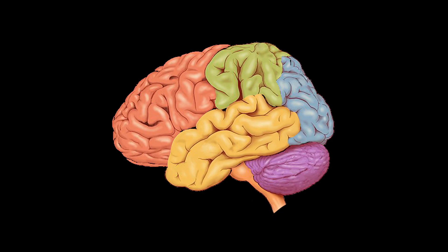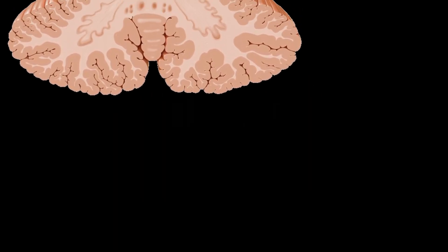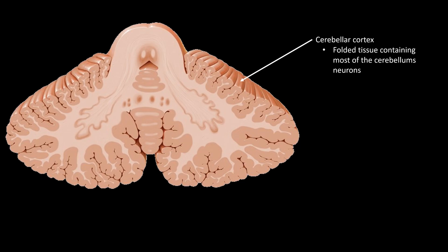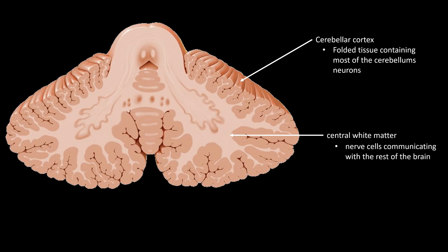It consists of a ventricle filled with fluid as well as a cortex covering white matter. The cerebellum can be separated into two main parts: the cerebellar cortex, made out of folded tissue containing most of the cerebellum's neurons, and the innermost part containing nerve cells that communicate information from the rest of the brain.